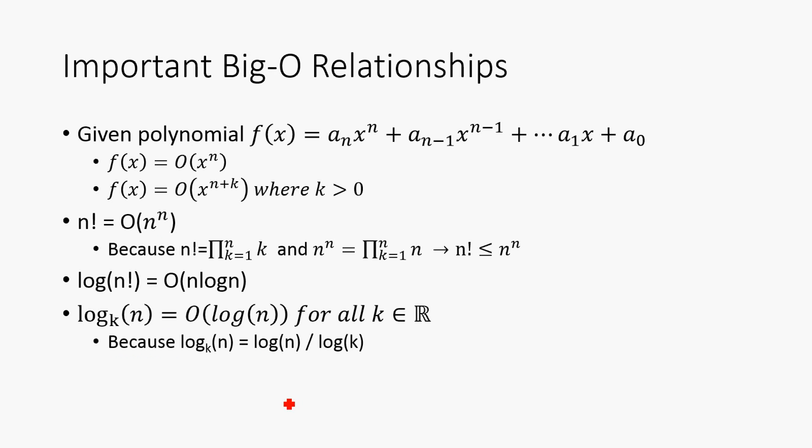So, an important Big-O relationship to remember is that given a polynomial of degree n, and whatever constant coefficients are on the terms, we say that f(x) is going to be Big-O of x^n. And we also say that this f(x) of degree n is going to be Big-O of any degree polynomial of x bigger than n. So, for instance, x is going to be Big-O of x². That's what I'm meaning by there.